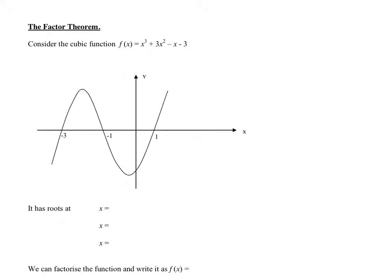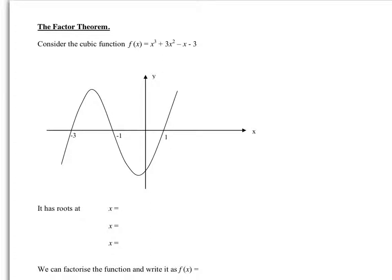We're now going to look at the factor theorem, which is part of the Core 2 unit. It's extending a little bit further from when we did quadratics, because when we looked at quadratics it was an x squared function and it cut the x-axis in two places. When we consider a cubic function, then the cubic function will actually cut at three places — sometimes three places, sometimes the x-axis can be a tangent to a curve. There are different ways that it can cross the axis.